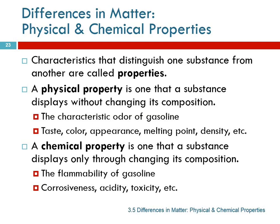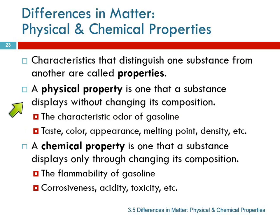We've got physical properties and chemical properties. A physical property is a characteristic of a substance that you can observe, or that the substance displays, without changing its composition. So like the characteristic odor of gasoline — it gives off an odor, we smell it, and the process of observing that does not cause the gasoline to change into something else.